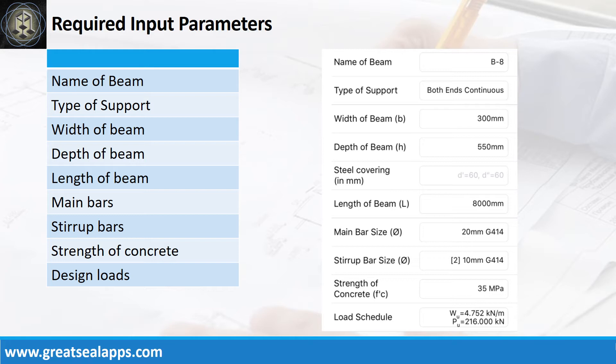Enumerate input parameters required. Strength of concrete, 35 MPa, factored uniform load, 4.752 kN per meter, and factored concentrated load, 216 kN.